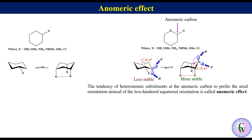There is another accepted explanation for the enumeric effect based on dipole-dipole interaction. The conformation with equatorial substituent has the dipoles involving both heteroatoms partially aligned and therefore repelling each other, while in the conformation with the axial substituent these dipoles roughly oppose each other, thus representing a more stable and low energy conformation.